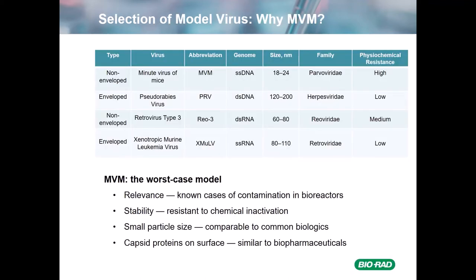Next up is the selection of model viruses. Here you see a table of the four viruses typically used in later stage viral clearance studies. They cover both enveloped and non-enveloped viruses, as well as DNA and RNA, a range of sizes, four different virus families, and varying levels of physicochemical resistance. MVM has been considered the worst-case model for several reasons: there have been known cases of contamination in bioreactors, it's very stable and resistant to chemical inactivation, and its small particle size of 18 to 24 nanometers means the capsid proteins on the surface lead to it interacting similarly on some resins as biopharmaceuticals.